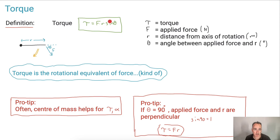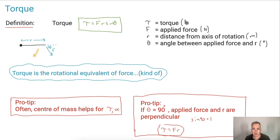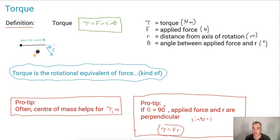Why does that help us? Because if torque is just force times distance, that means the units must be Newtons times meters. So torque is in Newton-meters. That's why I said it's not exactly equal to force. By the way, the direction of torque is really weird — I haven't said what the direction of torque is yet; we're going to do that later.